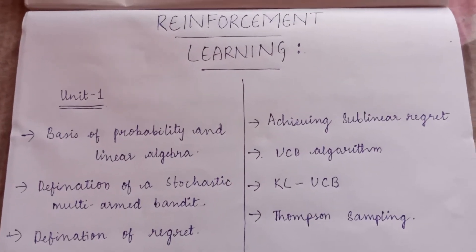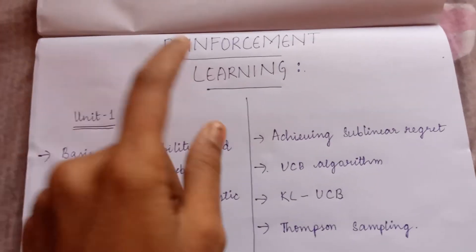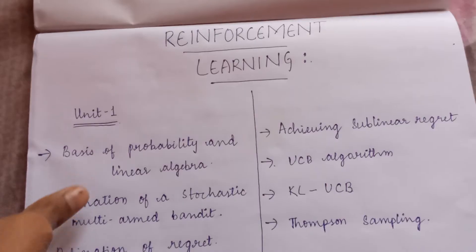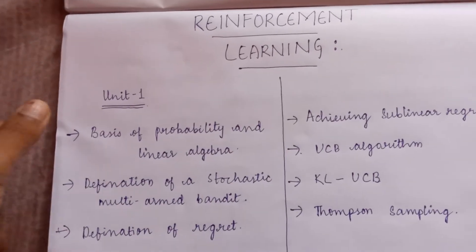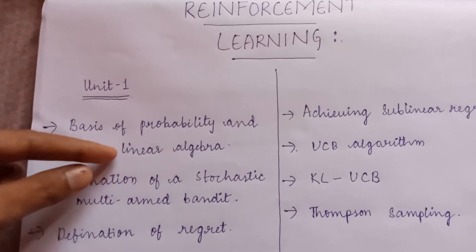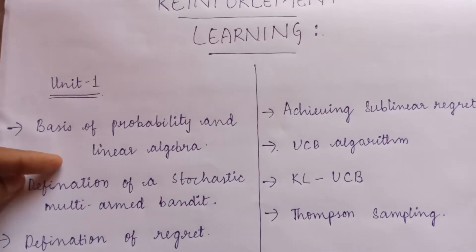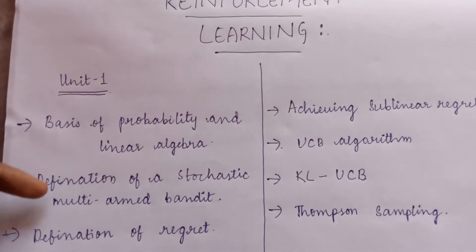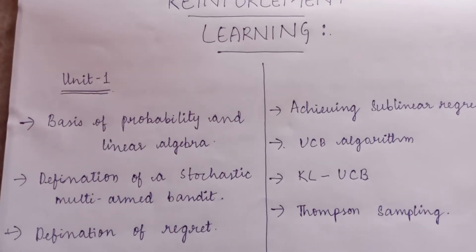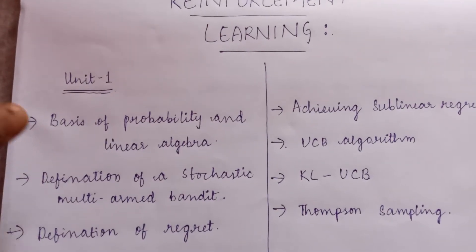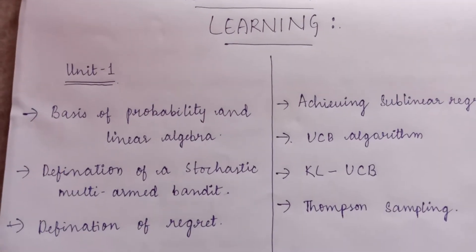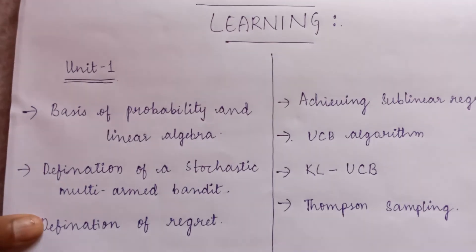Hello everyone, today we'll start with reinforcement learning unit 1. Let's first discuss what the topics are. First is basics of probability and linear algebra, second is definition of a stochastic multi-armed bandit, third one is definition of regret.